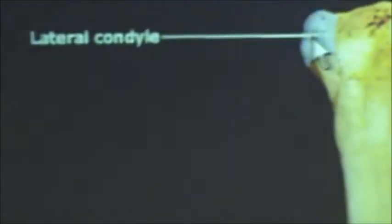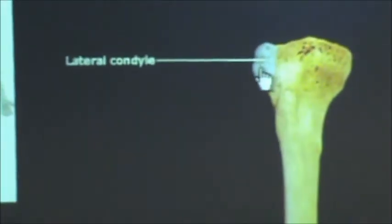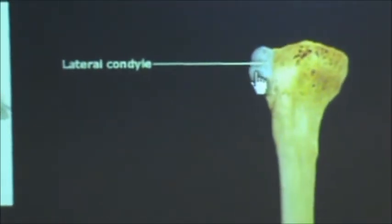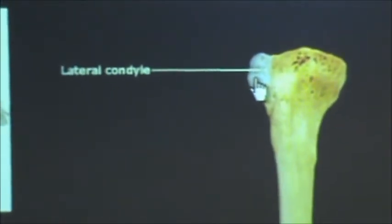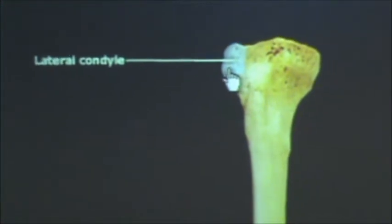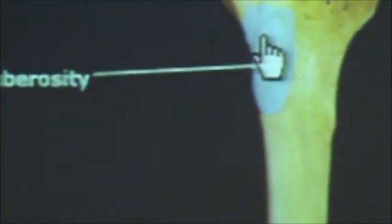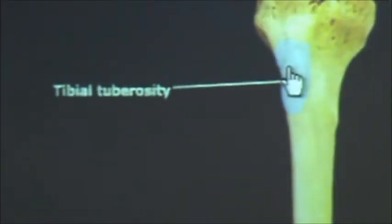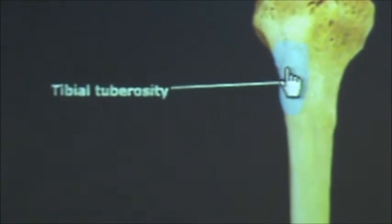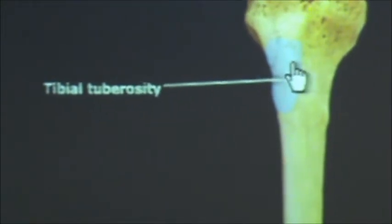Below that we have a notch, and this is called the tibial tuberosity.